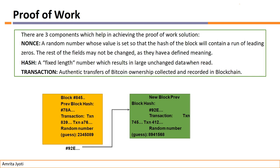SHA-256 generates a fixed-length 32-byte data for any input data. Whether your data is very small or very large, SHA-256 will always generate a fixed 32-byte output. MD5 generates 16-byte data. The hashing method used in blockchain is SHA-256. Proof of Work and hash functions will be covered in complete detail in the next video.